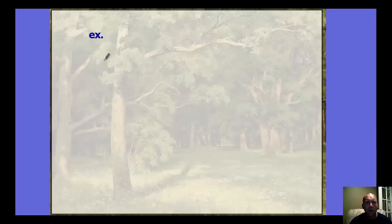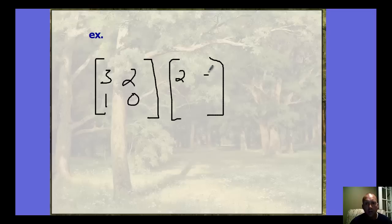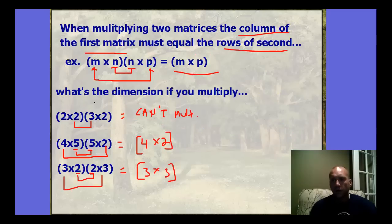For tonight, try multiplying this matrix problem: the matrix with entries 3, 2, 1, 0 times the matrix with entries 2, negative 1, 4, negative 2. Turn it in when you walk in and we'll check to make sure you're on target. Remember: adding, subtracting, scalar multiplication, and matrix multiplication. Have a good night — see you tomorrow!